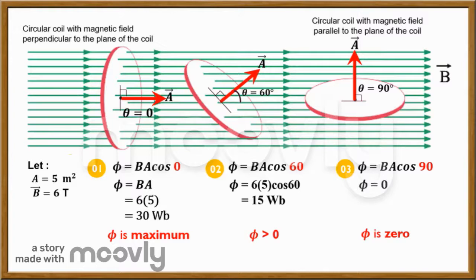Therefore we can conclude that magnetic flux is maximum if the plane of the coil is perpendicular to the magnetic field, and it is minimum or zero if the plane of the coil is parallel to the magnetic field.